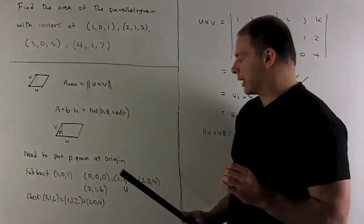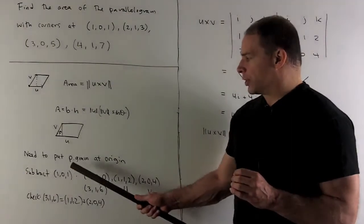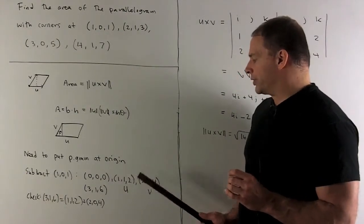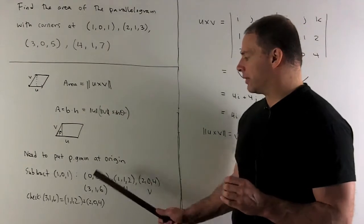When I do that, I'll get 101 goes to 000. I'll have 112, 204, and 316.